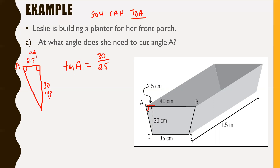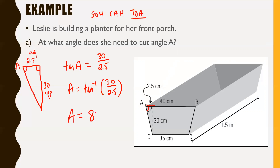We want to find angle A, so we have to get rid of tan by taking the inverse tan of both sides. So A equals the inverse tan of 30 divided by 2.5. Make sure you're in degree mode. Plugging it in: inverse tan of 30 divided by 2.5, rounding to the nearest whole angle, A equals 85 degrees. So Leslie would have to cut that angle at 85 degrees.